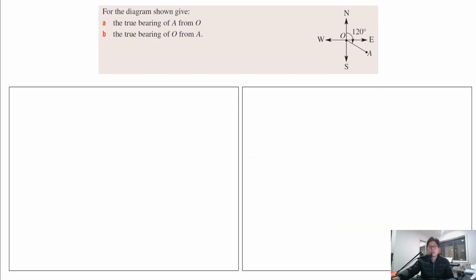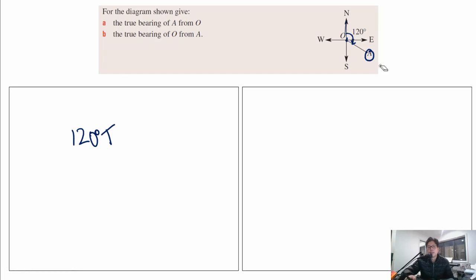Let's try some questions. The diagram asks for the true bearing of A from O. We start at O, face north, and go 120 degrees clockwise — so the answer is 120 degrees true. For part B, we need the true bearing of O from A, so we're going the other way. I'll draw this out: O at the top, A below it, with compass points at each.